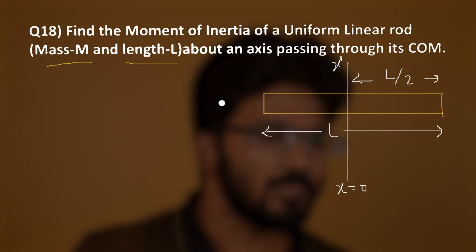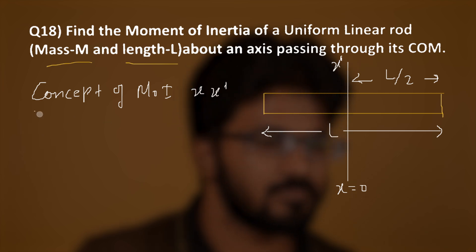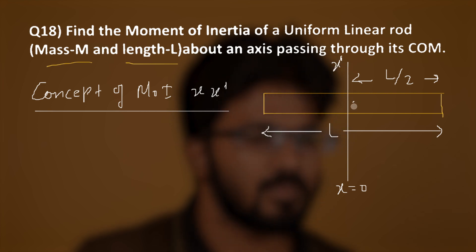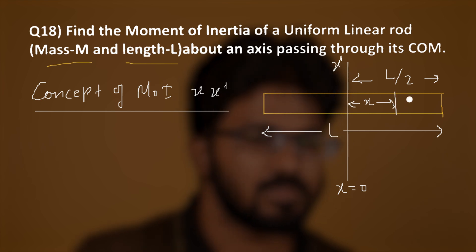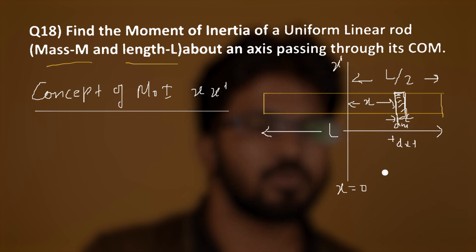So how can we solve this? First we have to learn about the concept of moment of inertia. We take a dx element at a distance x from the center of mass and consider this element as dm, with a very minute breadth dx. We are going to use calculus here — this is for students who want to learn how to find moment of inertia using calculus.